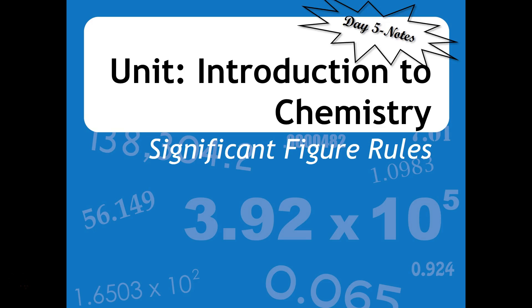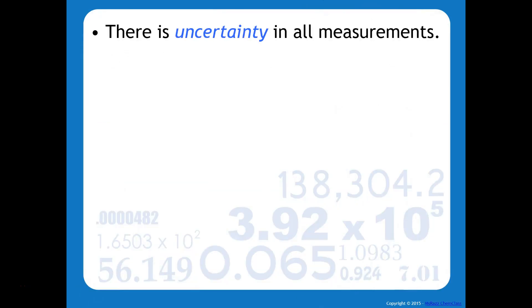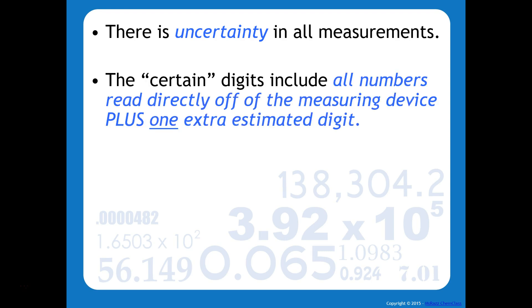This video will teach you all about significant figure rules. The fact of the matter is there is uncertainty in all measurements. The certain digits in your measurement includes all numbers read directly off of the measuring device plus one extra estimated digit.